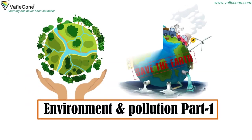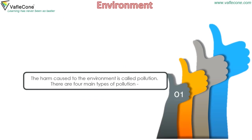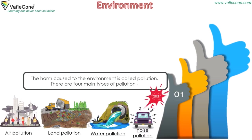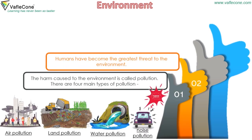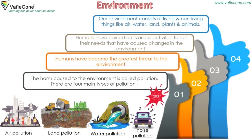Environment and Pollution Part 1. The harm caused to the environment is called pollution. There are four main types of pollution: air pollution, land pollution, water pollution, and noise pollution. Humans have become the greatest threat to the environment, carrying out various activities to suit their needs that have caused changes in the environment. Our environment consists of living and non-living things like air, water, land, plants, and animals.